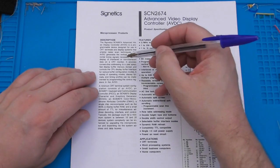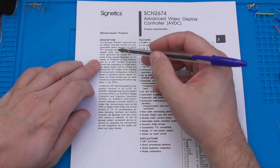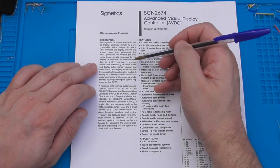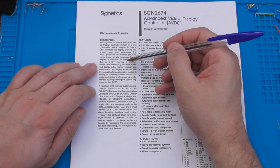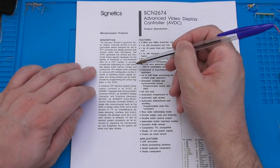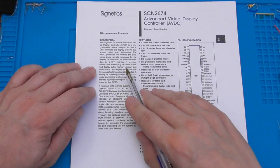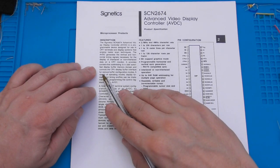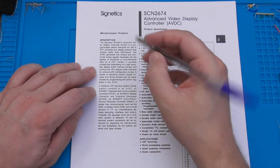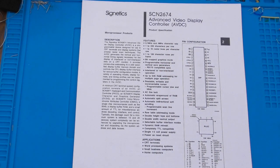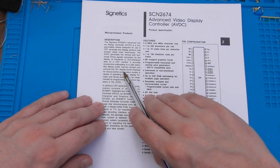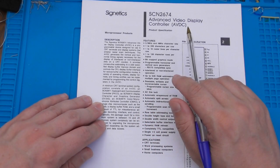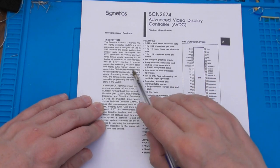Quoting from the opening paragraph here, the AVDC generates the vertical and horizontal timing signals necessary for the display of interlaced or non-interlaced data on a CRT monitor, and it provides consecutive addressing to a user-specified display buffer memory domain, and controls the CPU display buffer interface for various buffer configuration modes.